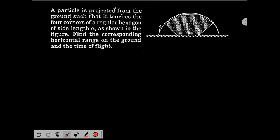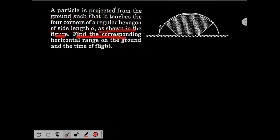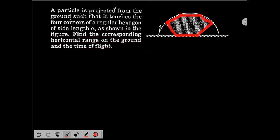This question is based on projectile motion. A particle is projected from the ground such that it touches the four corners of a regular hexagon of side length a, as shown in the figure. The diagram is slightly skewed but it is a regular hexagon, and the particle flies such that it touches all four corners.